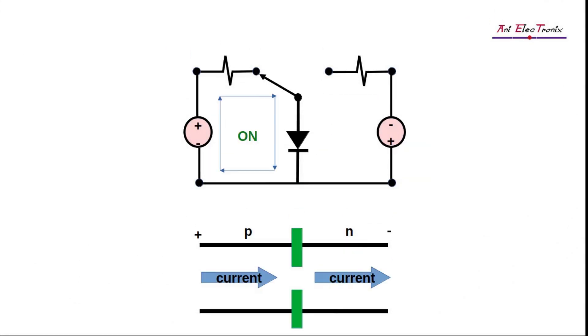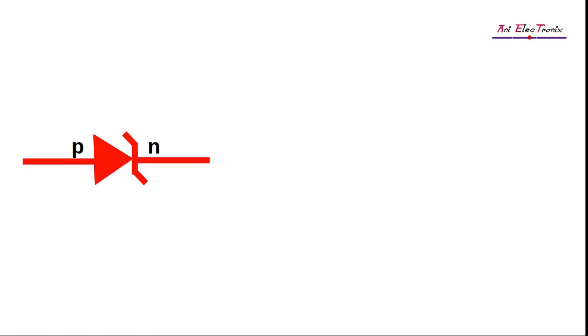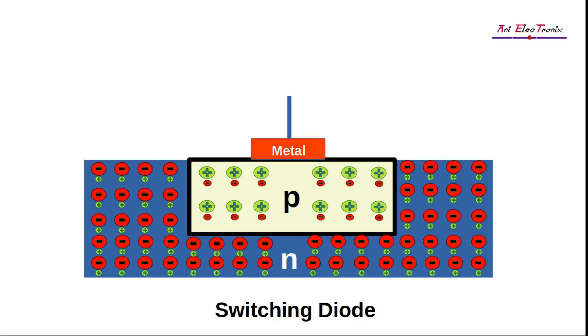A PN junction diode, while it is used as a switch, is also called a switching diode. Switching diode is a special kind of diode like Zener diode; they are manufactured in a different way. The P region is lightly doped and the N region is heavily doped.